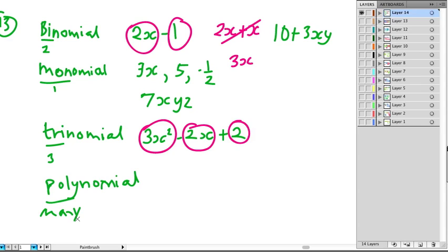We don't think of two as many, but a polynomial could just contain two terms. So a polynomial is really a binomial. For example up here, 2x minus 1 is in fact a polynomial.